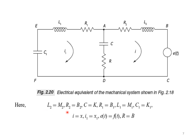The equivalent values are: L2 = M2, R2 = B2, C = 1/K, R1 = B1, L1 = M1, C1 = 1/K1. Current i is equivalent to the derivative of displacement x and x1, V(t) is equivalent to force, and R is equivalent to B. These are the equivalent values obtained with respect to force voltage analogy.